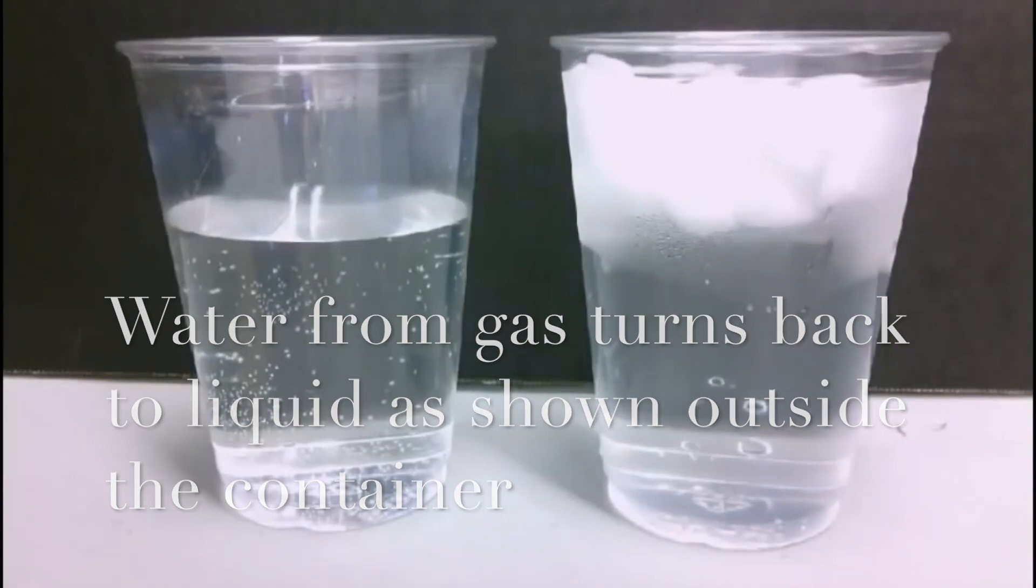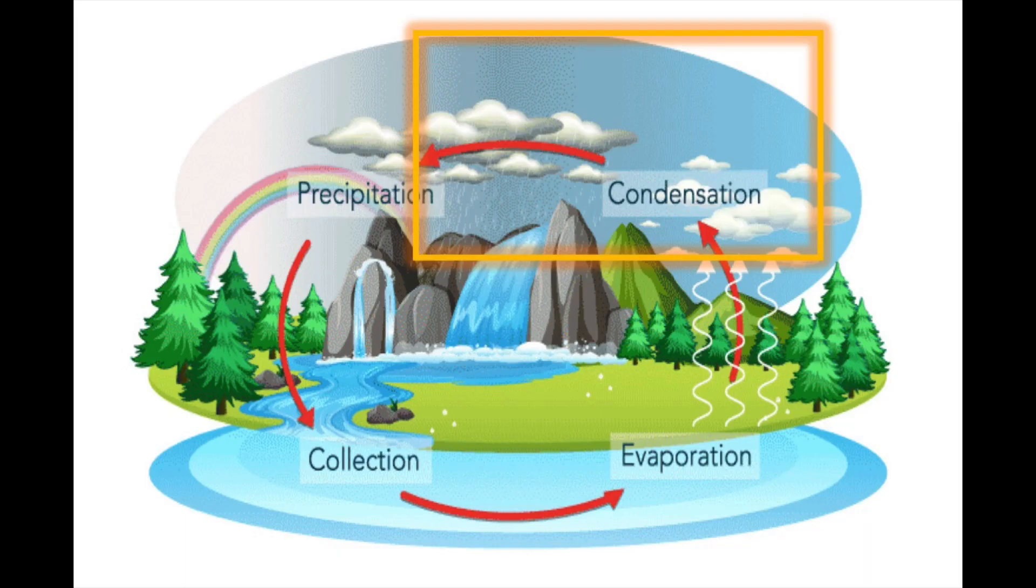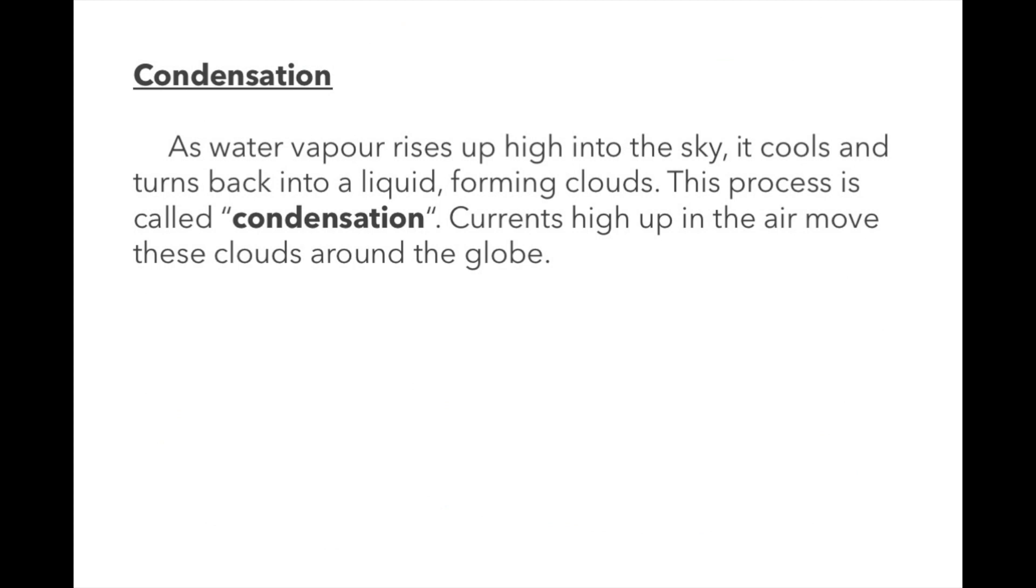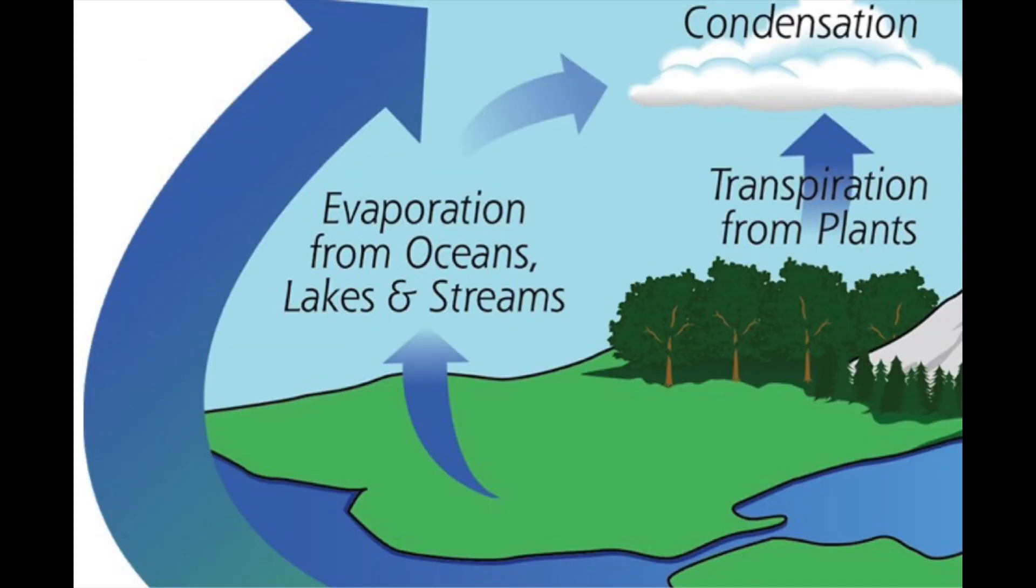The same thing happens as water vapor rises into the sky and turns into liquid water. It is important to remember that not all water condenses to form clouds. Some of it condenses close to the ground to form dew and some of it rises up only a little bit to form fog. But most of it rises high in the sky to form clouds. Clouds are made of tiny water droplets, billions and billions of them.